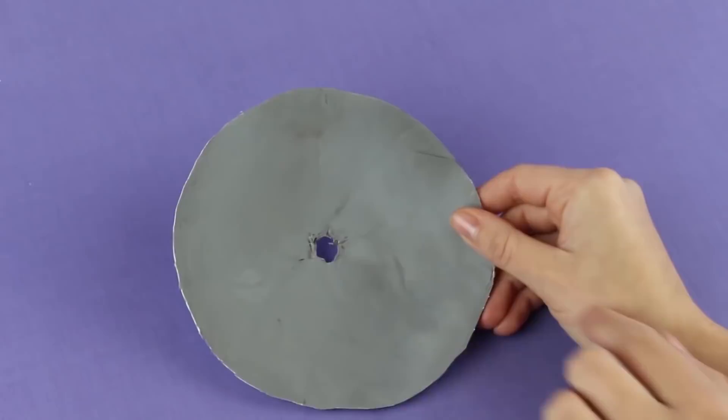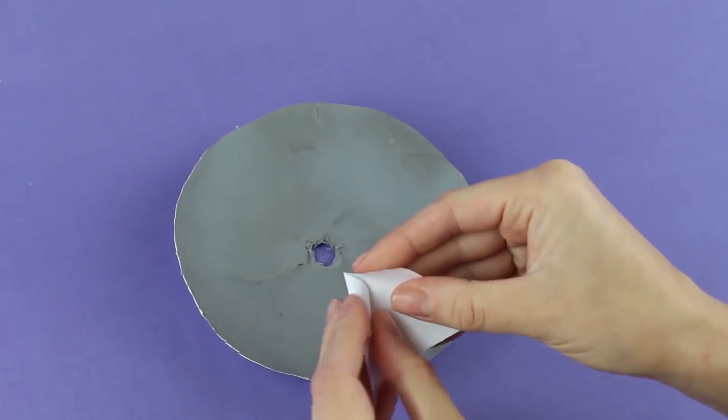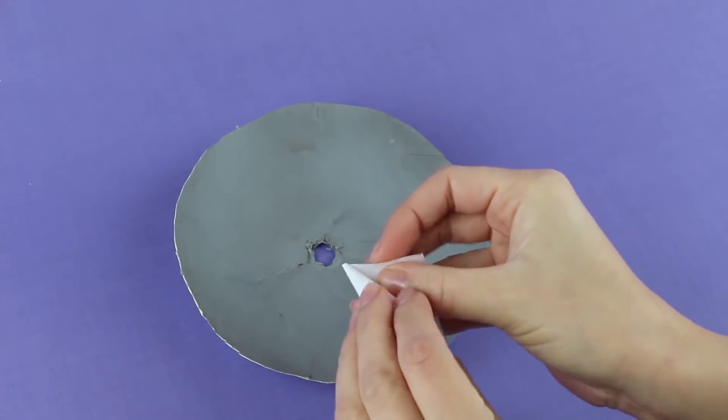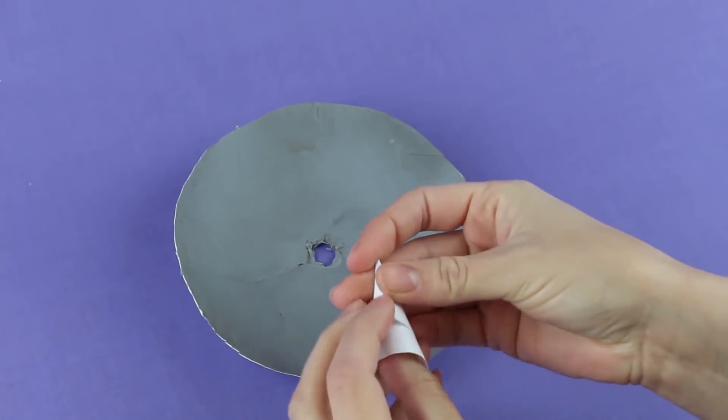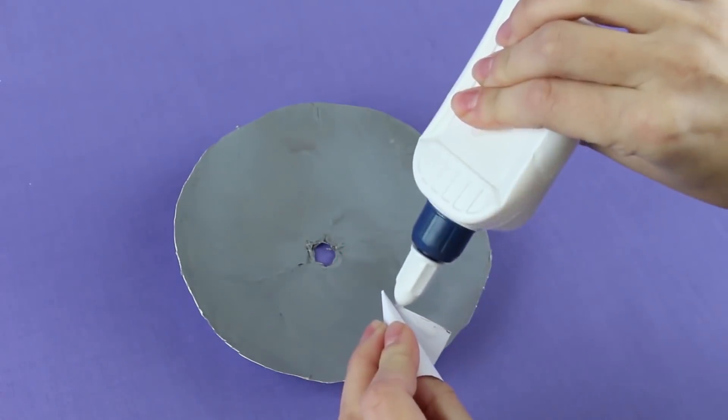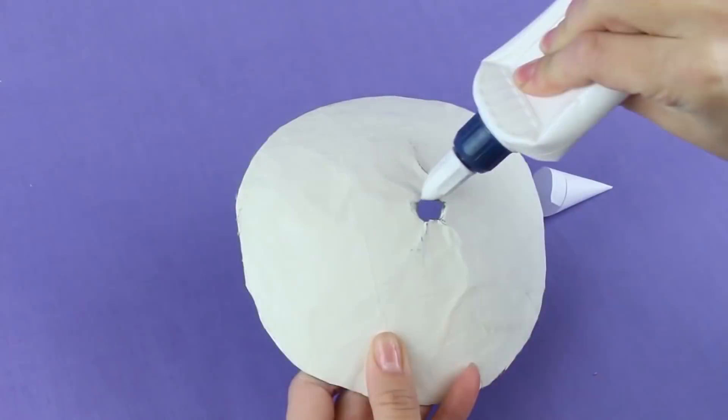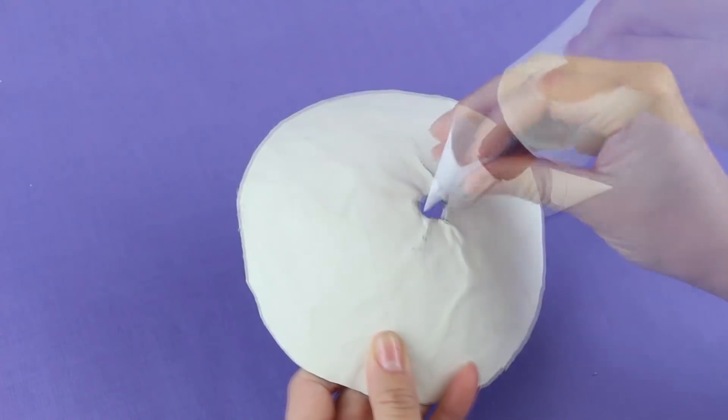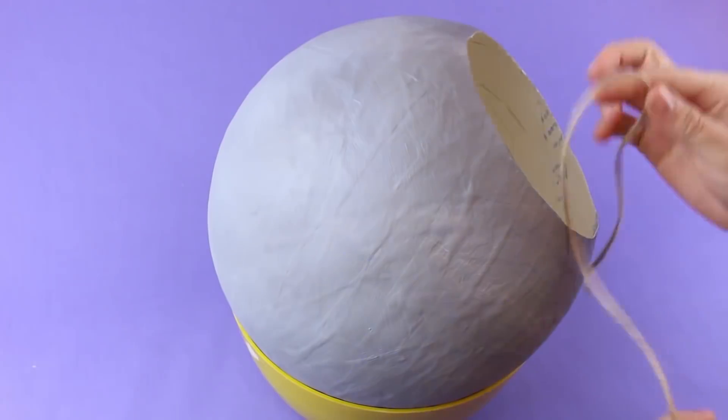Cover the hole in the cut element with a piece of paper, forming a cone. Attach it with white glue. Add glue to the hole's sides. Put the cone inside.